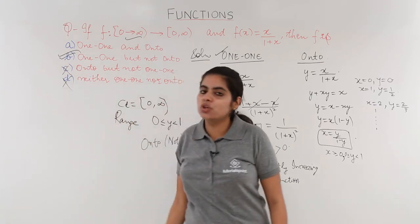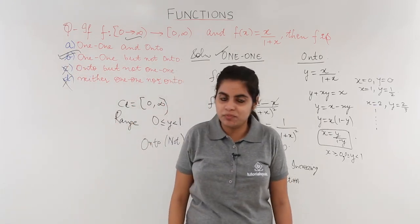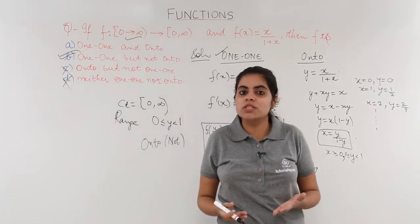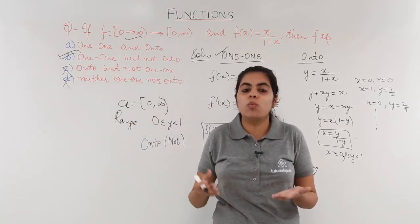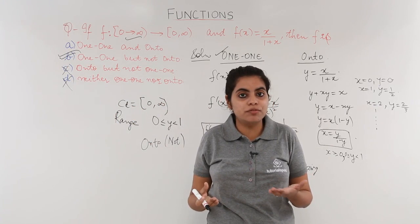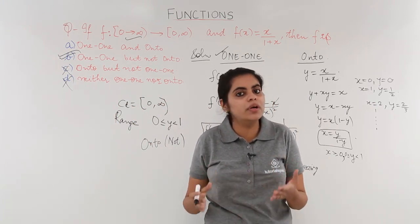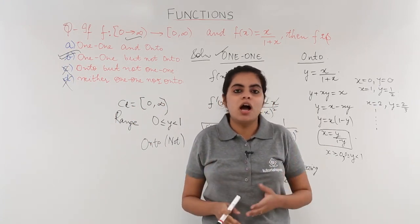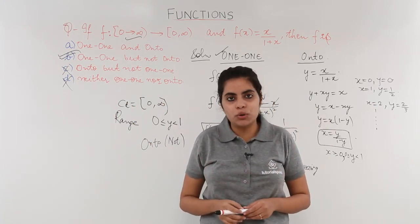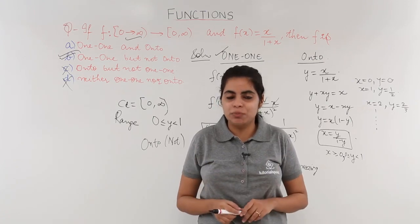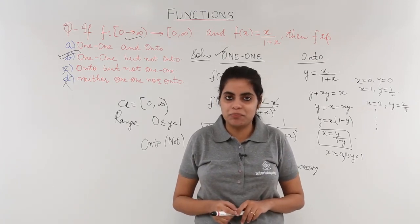So in this question we saw what a bijective function looks like numerically. We had already known about one-one and onto functions, and this was a numerical example on the same concept.